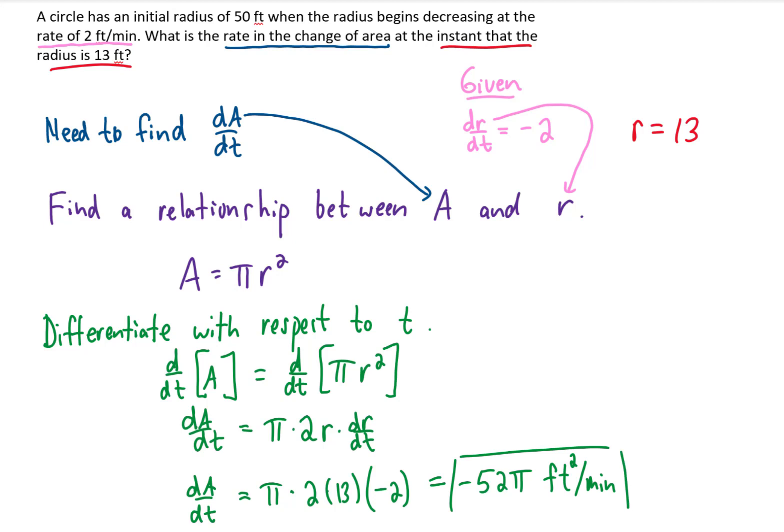That is an exact answer, and that means that the area of this circle is decreasing at a rate of 52π feet squared per minute. If we wanted to approximate this answer, we would plug this into a calculator, and that would give us about 163.4 feet squared per minute.